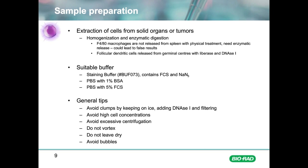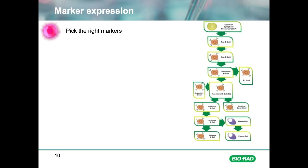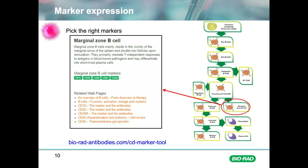The next step is to identify your cells. Finding the best marker for some cells is relatively straightforward — CD3 for T cells or CD19 for B cells, for example. Identifying specific subsets can be trickier and may involve background reading. To help, we have an interactive immune cell and marker tool, which allows you to search for any immune cell type. If you select a specific cell, such as a marginal zone B cell, information on the cell and relevant markers are shown, along with a direct link to available antibodies.